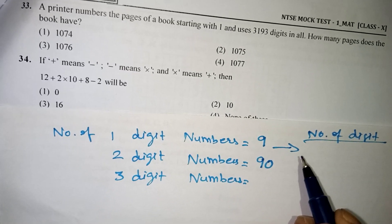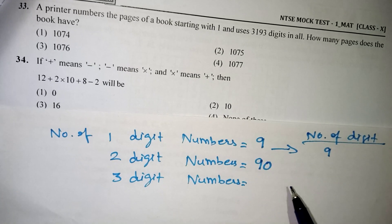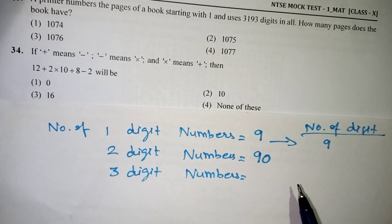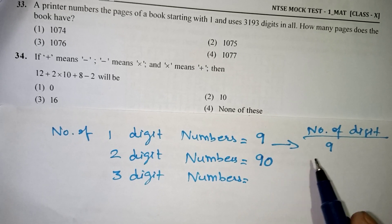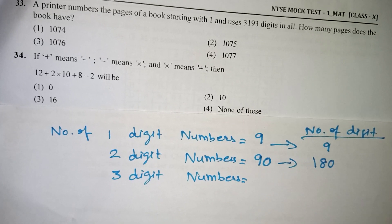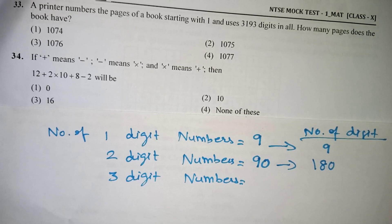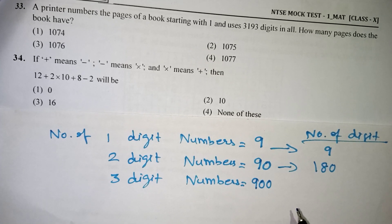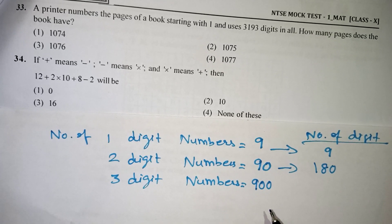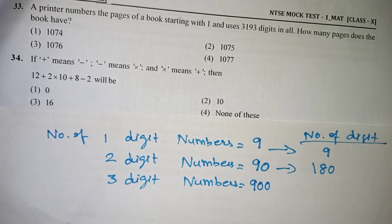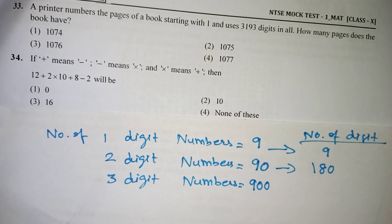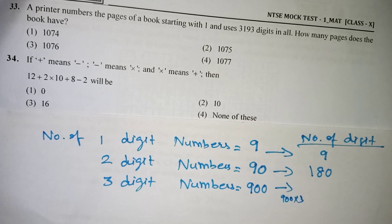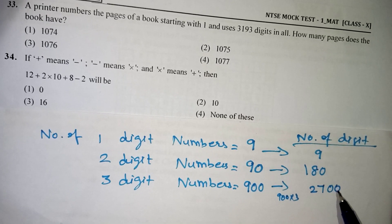First, let us calculate how many digits are used by each range. One-digit numbers: there are 9 numbers, so 9 digits printed. Two-digit numbers: from 10 to 99, there are 90 two-digit numbers, so 90 × 2 = 180 digits. Three-digit numbers: from 100 to 999, there are 900 three-digit numbers, so 900 × 3 = 2700 digits.